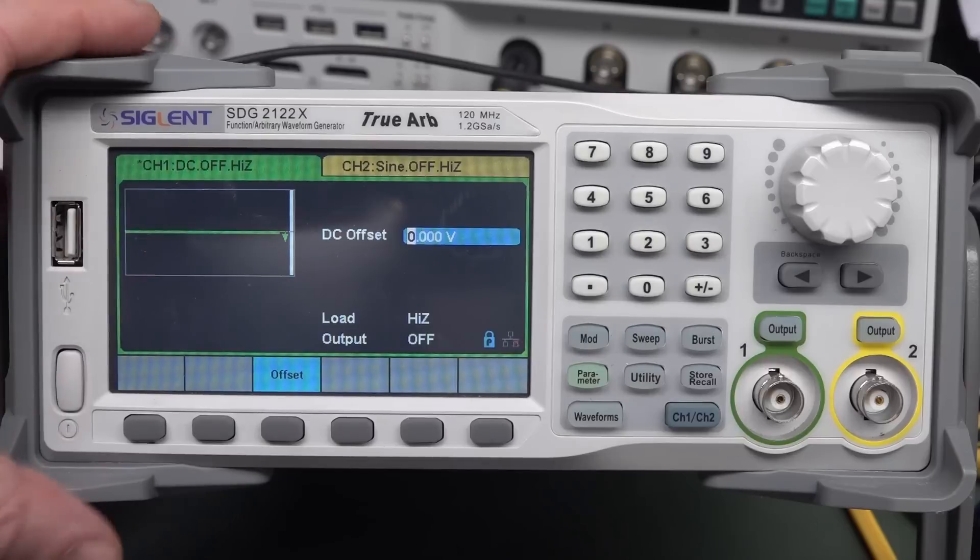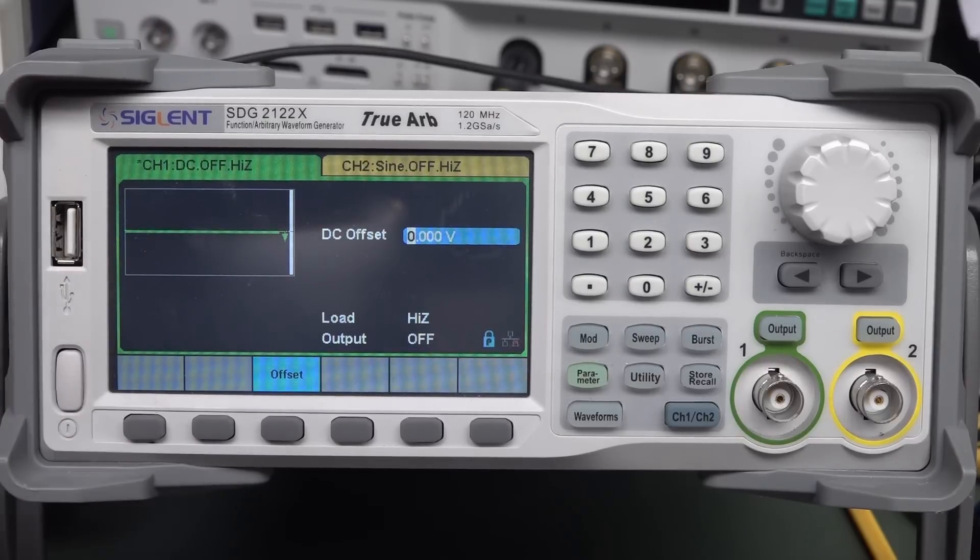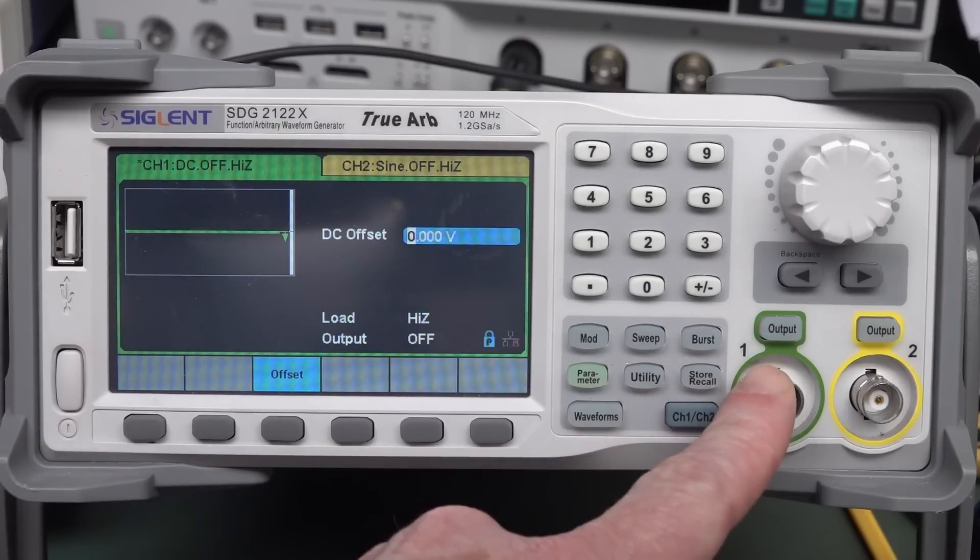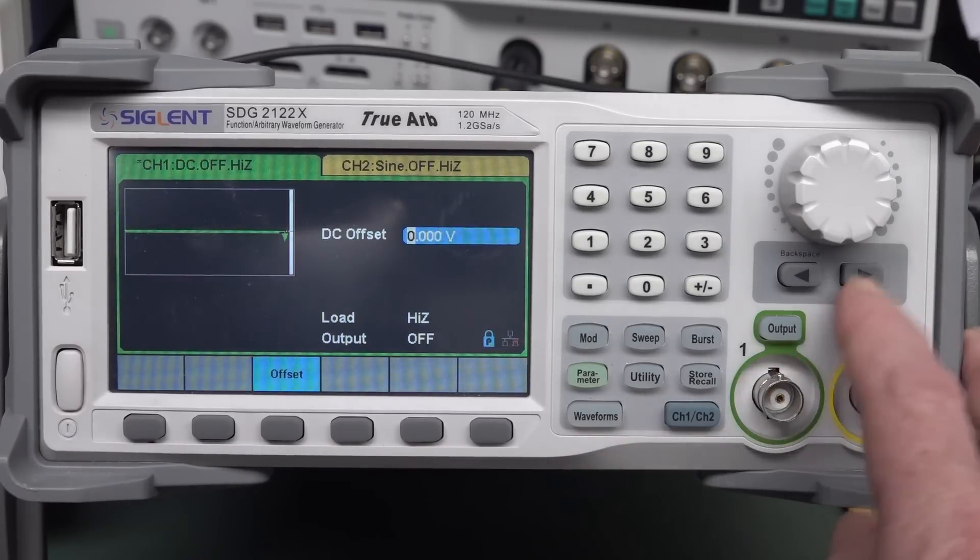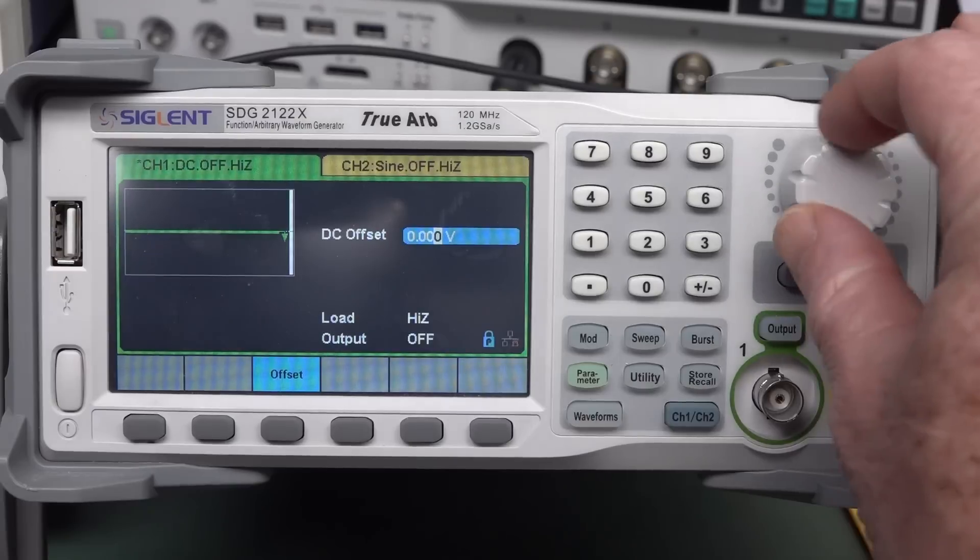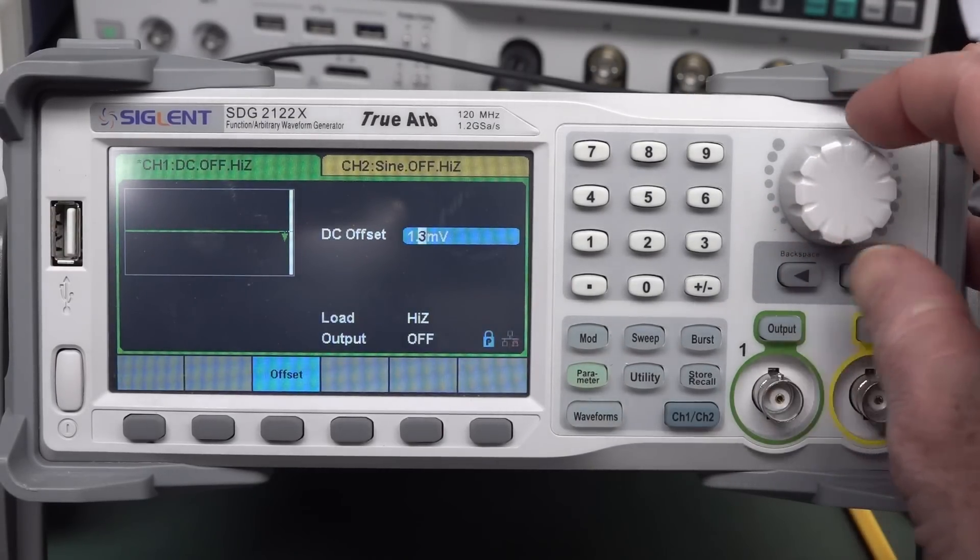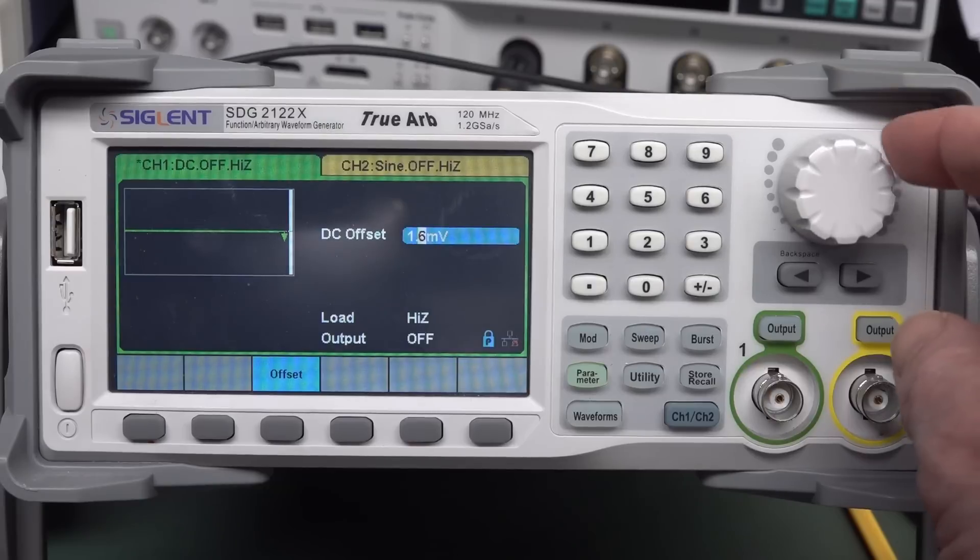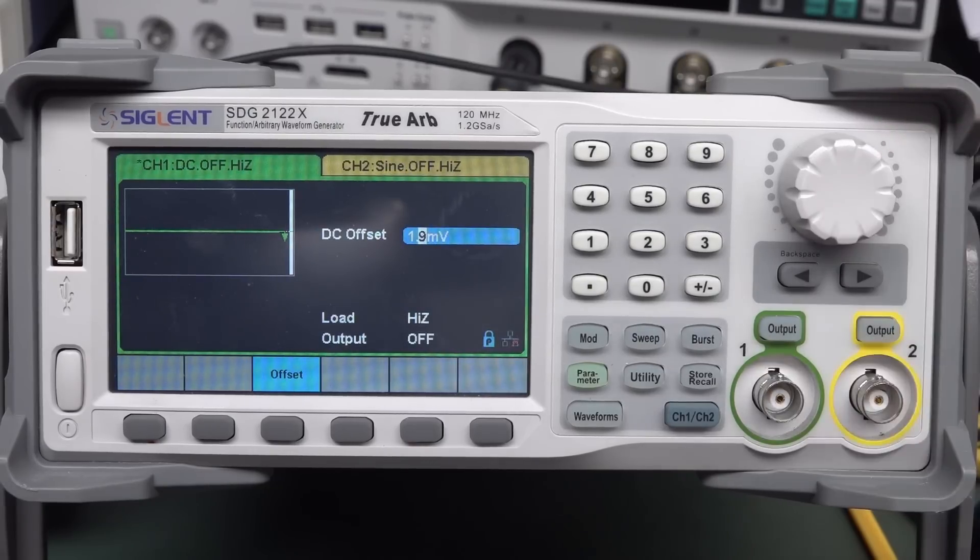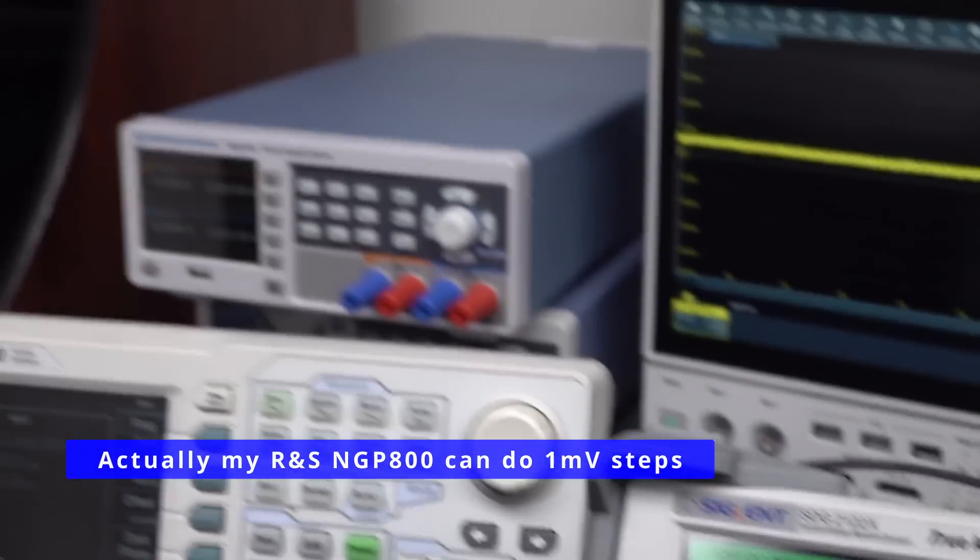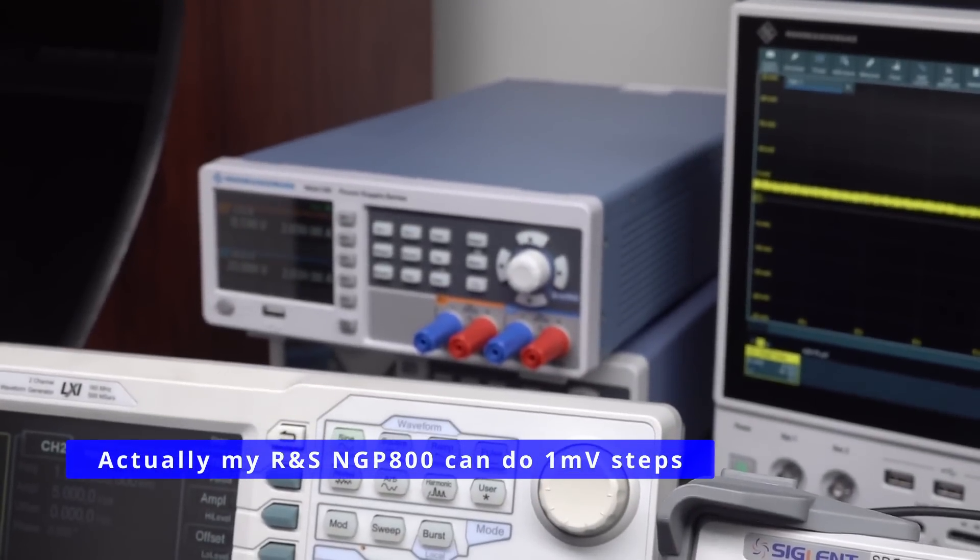A lot of people don't realize that their arbitrary waveform generator should have a DC option like this. Usually it might be called DC offset, but they can actually generate a DC voltage on the output which can be precisely adjusted. You might think it goes 1 millivolt but we can actually go over and generate 0.1 millivolt steps. So that's two orders of magnitude better than the best power supply I've got in my lab.